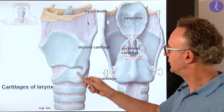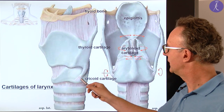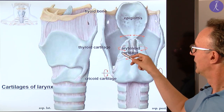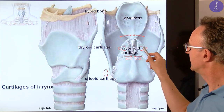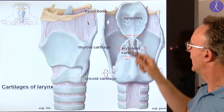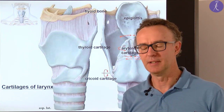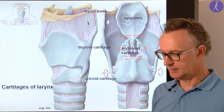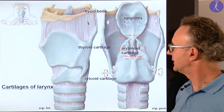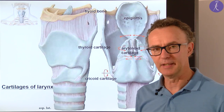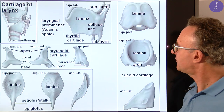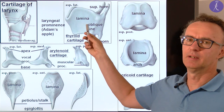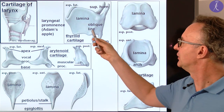These include the thyroid cartilage, the cricoid cartilage, and on top of the cricoid — in a posterior view — the arytenoid cartilages. At the end we have the epiglottis. You studied in the previous semester in histology that the epiglottis is made of elastic cartilage, while the others have hyaline cartilage.